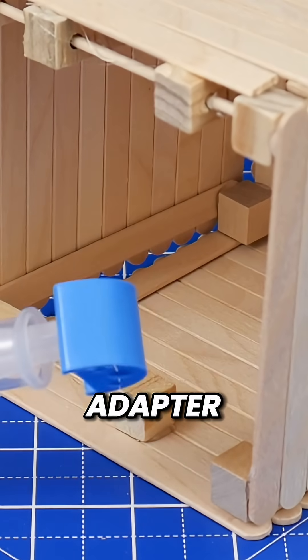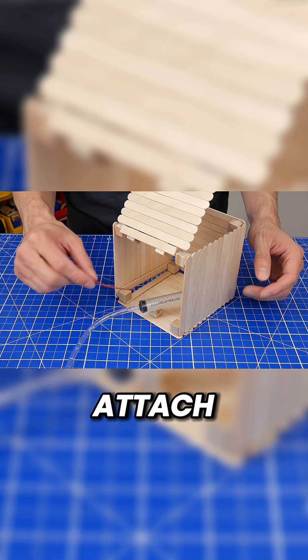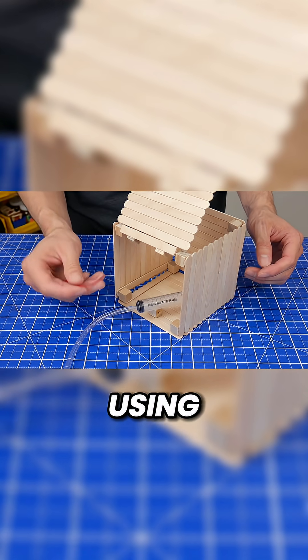Next get the syringe that has the adapter and position it inside the box. We're going to attach this syringe to that cube with a hole in it using a cable tie.